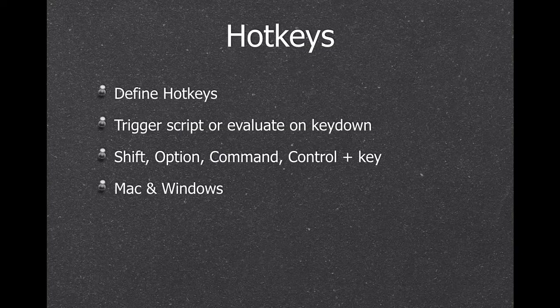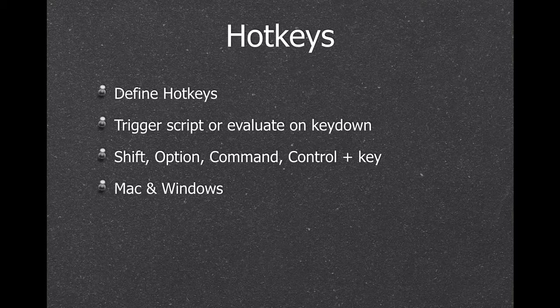You can define hotkeys to trigger a script by a key combination including Shift, Option, Command, Control, and function keys. For example, one customer presses F5, a script runs, uses AppleScript to get the text of an email, and creates a record. Hotkeys can be global for all applications or local when FileMaker is in front.